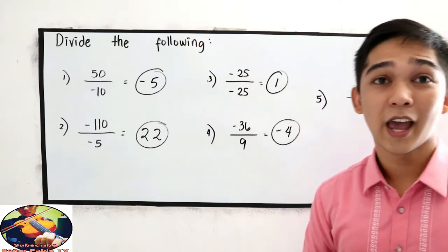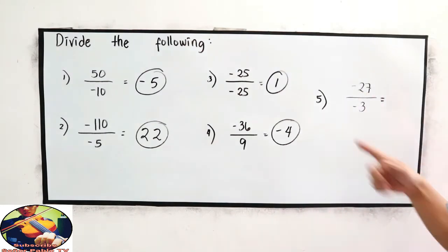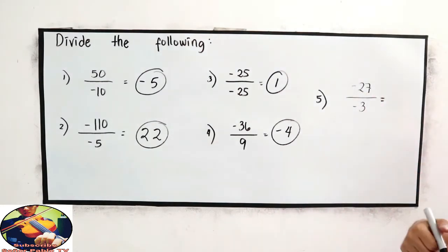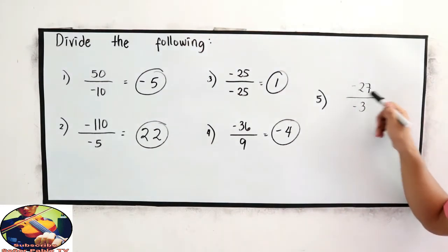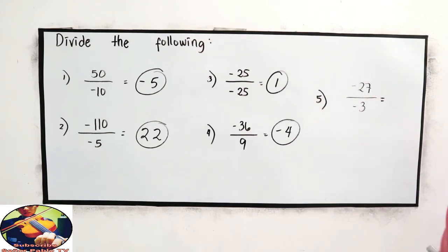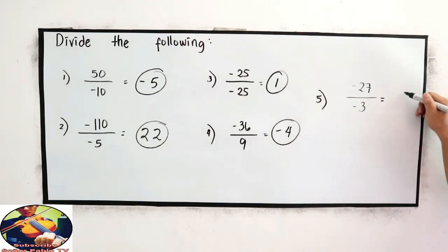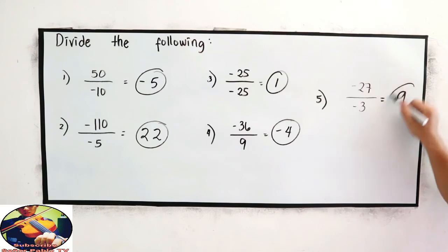And for number 5: negative 27 divided by negative 3. Like signs, so the quotient is positive — that is 9.